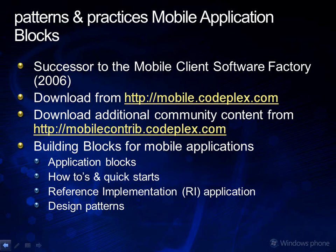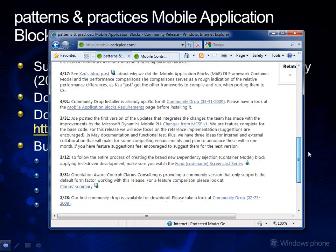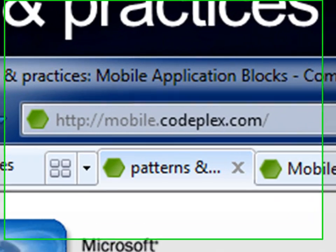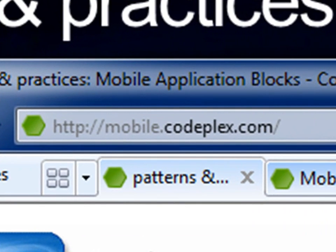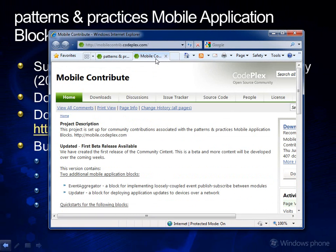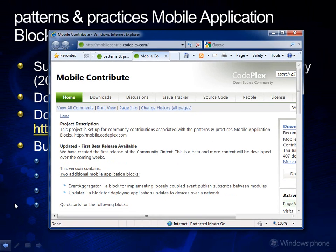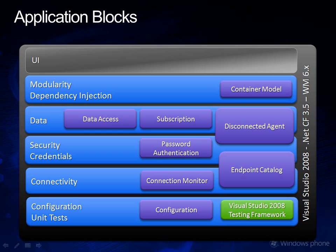Where can you get all this material? Following this community-driven approach, we have enabled two sites for the blocks. The first is the official mobile application block site located at mobile.codeplex.com, where you can find the main block source code and a few quickstarts and how-tos. The second site is the mobile contribution project at mobilecontrib.codeplex.com, where you can find additional community content including how-tos, quickstarts, the reference implementation application, and even some additional blocks like the Prism event aggregator or the mobile updater application block.